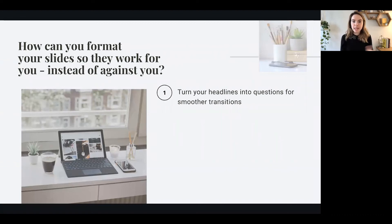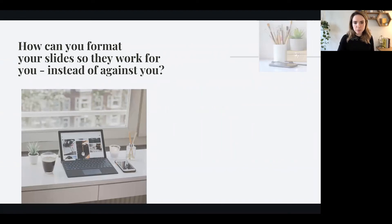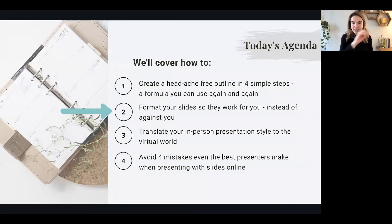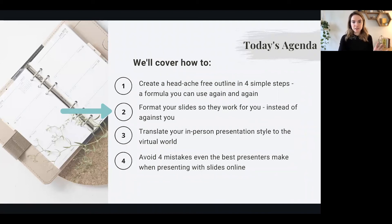I want to show you that again to keep it really meta. I took you back to the agenda slide — and this is another thing I'd encourage you to do: keep coming back to your agenda slide so you're orienting people in where you are. I like to use a big fat arrow to show exactly where we are, because that's ultimately what you're doing — steering people's focus. So as I transition from the agenda slide, I'm going to use what's on the slide to help me: 'How can you format your slides so they work for you instead of against you?'